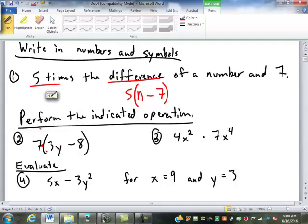So what we're going to do is distribute is the process, or the shortcut. Seven times three y is 21y. And then seven times a negative eight. Negative 56. Any questions on that one?